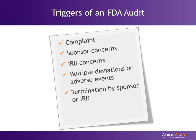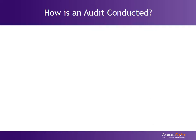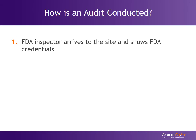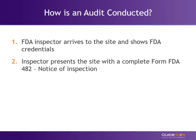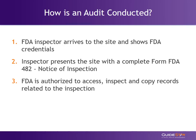Lastly, the FDA may have identified a special interest in the research site and conduct an audit to investigate that further. Clearly, there are several reasons the FDA may choose to audit a research site. Upon arrival, the inspector will show his or her FDA credentials and notice of inspection, also known as FDA Form 482. All of these steps give the FDA the authority to access, inspect, and copy any records related to the clinical investigation.